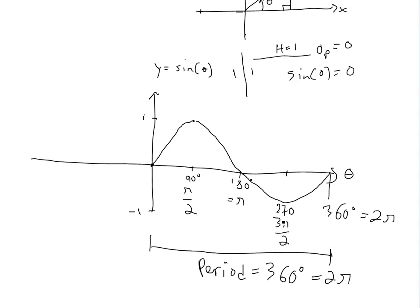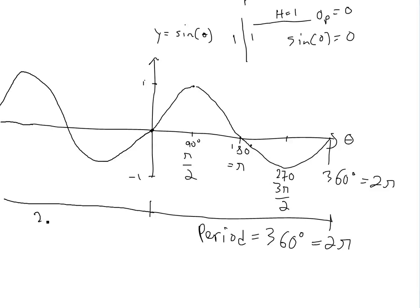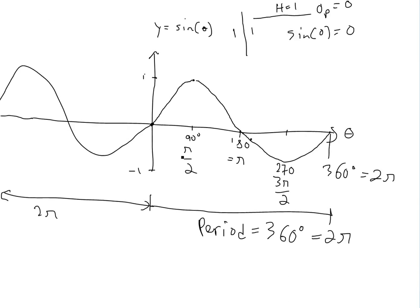So the period means before it starts repeating itself. If you look further along the graph, it's going to follow exactly this same pattern — this is 2 pi as well, from here all the way to wherever this is. Basically, that's how the sine graph looks.